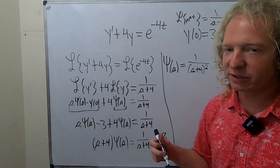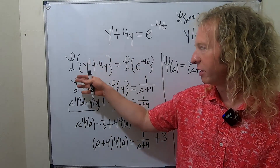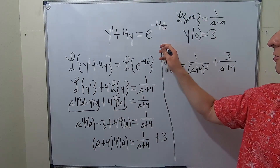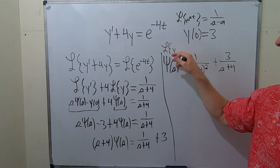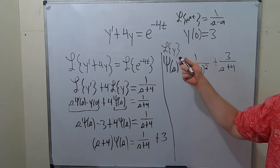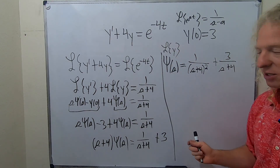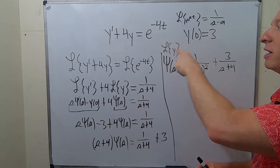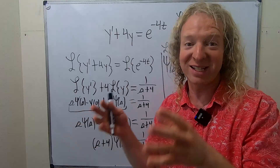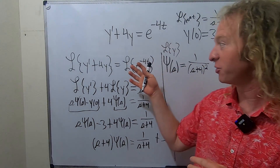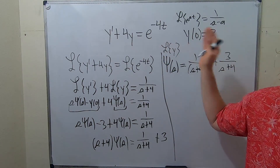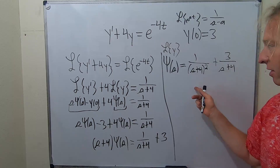So what are we even doing? We're trying to solve this differential equation. We took the Laplace of both sides, used formulas, and solved for ψ(s) — which is the Laplace of y. The Laplace is a transformation: it takes y and sends it to this expression. So the inverse Laplace takes this expression and sends it back to y, which is the actual answer to the problem.